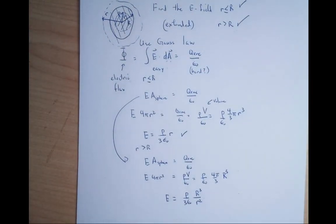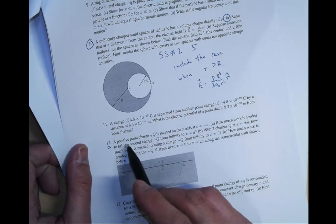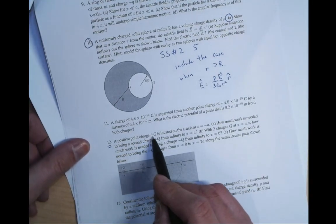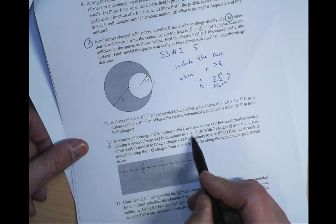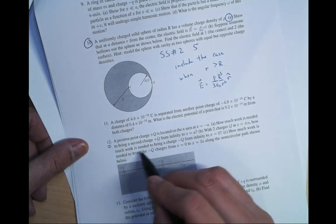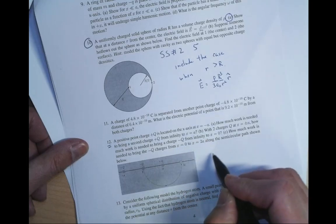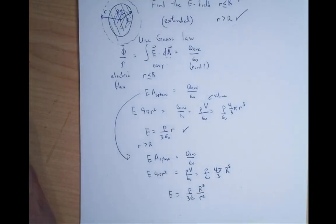The other one I want to do — and this is not in the lecture review but it's here — will be review sheet number 12. I have a positive charge q located at x equals minus a. How much work do you need to bring a second charge plus q from infinity to x equals a? And with those two charges, how much work do you need to bring a charge minus q from infinity to x equals zero?